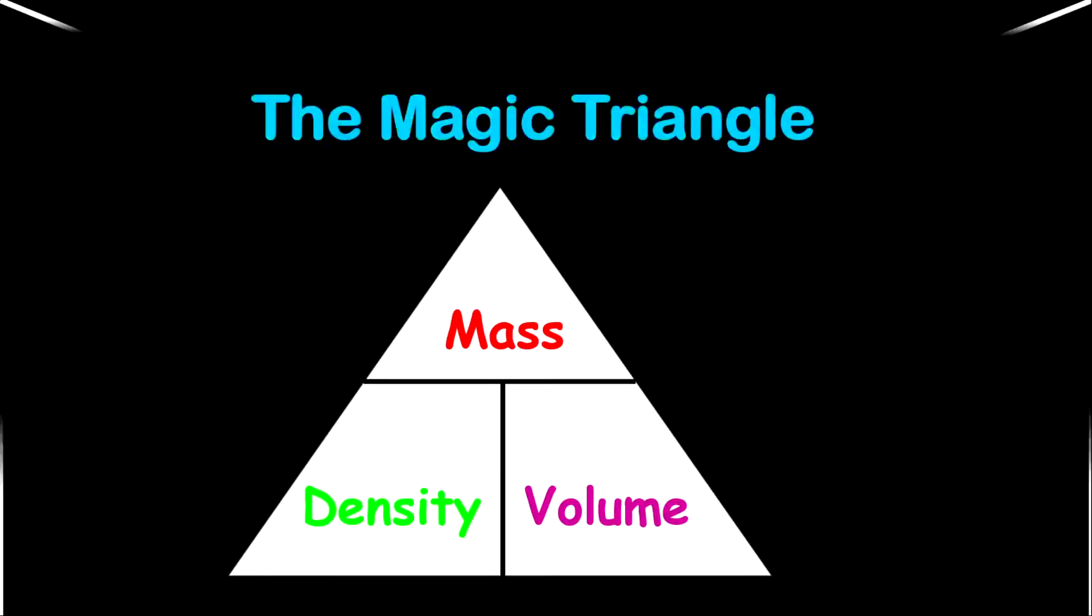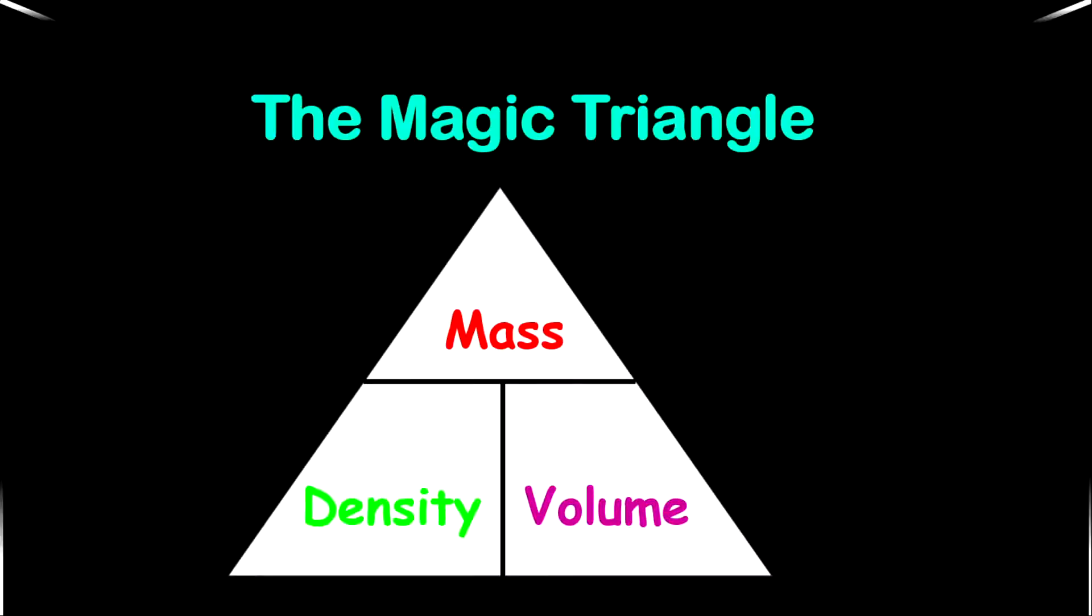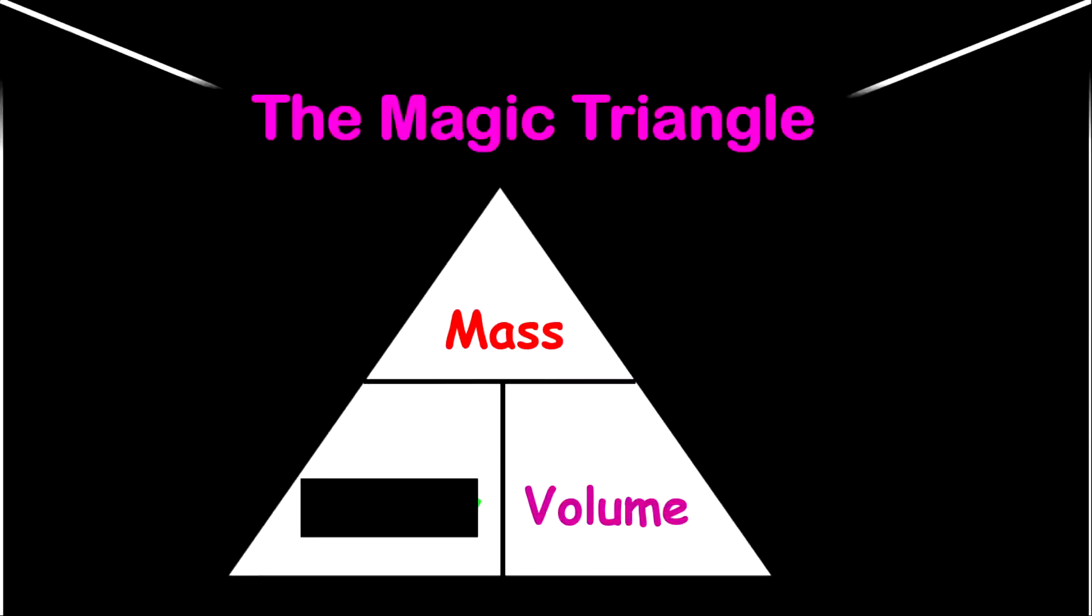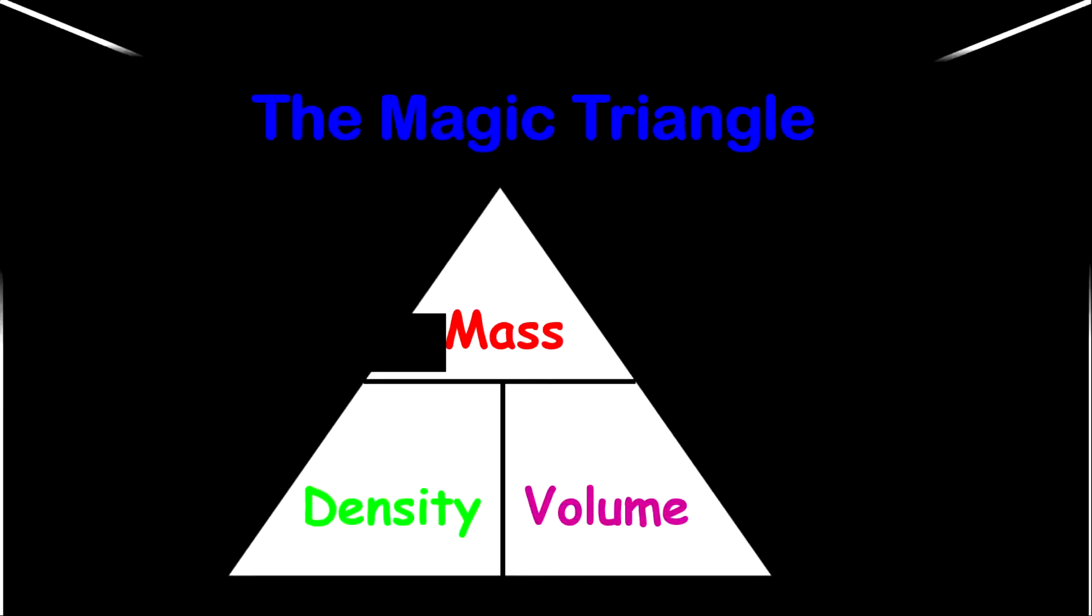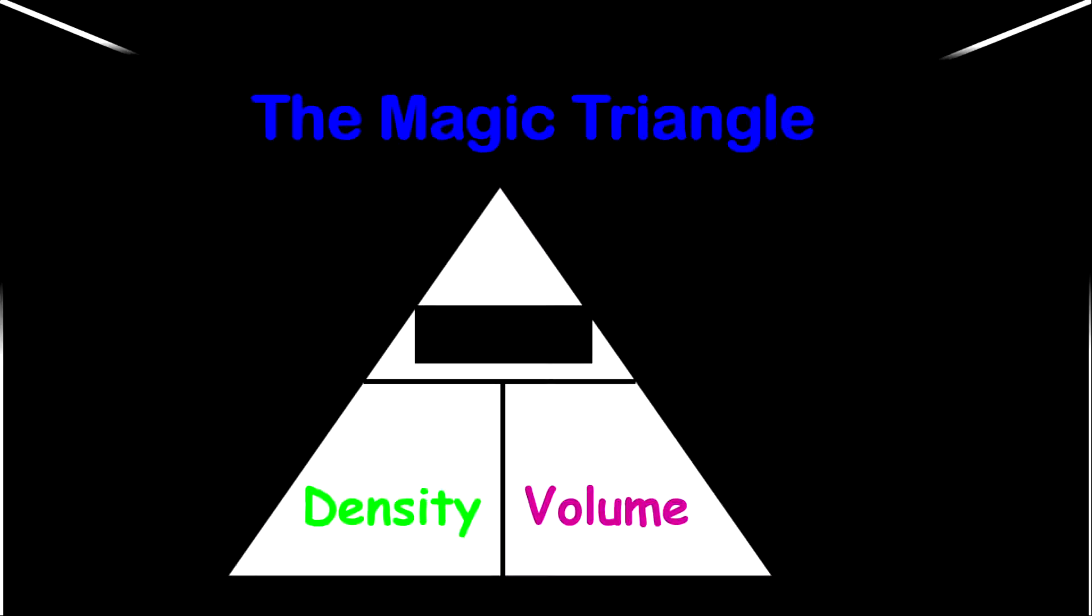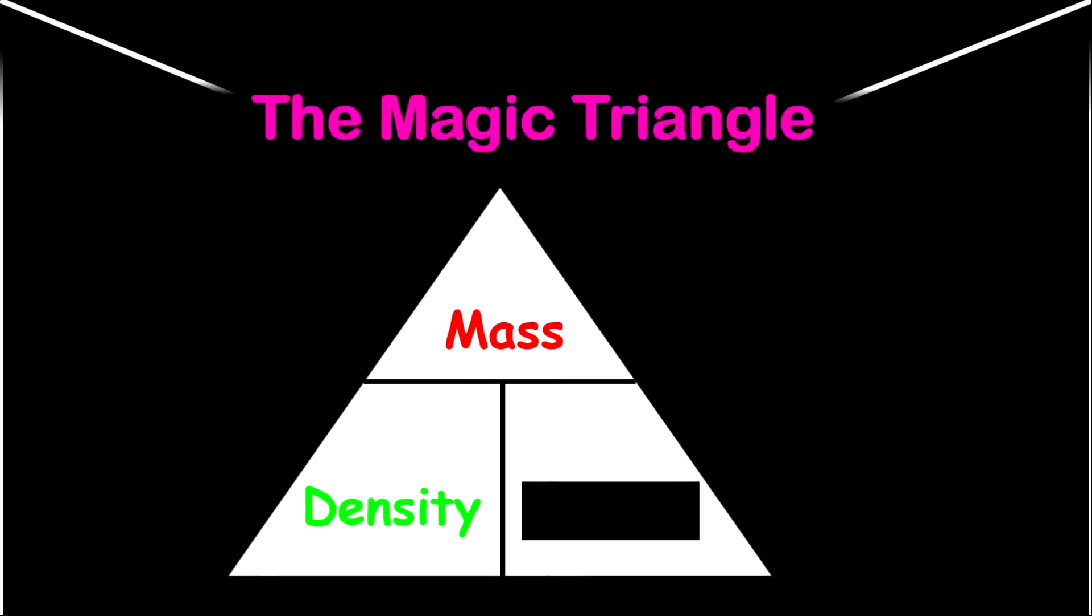So let's look at a magic triangle that will assist you in finding any of these quantities. If you want to find a specific quantity, what you need to do is to cover it up. So let's find density first by covering density. And if you cover density, what you're left with is mass over volume. Let's try find mass. Let's cover mass. What you're left with is density times volume. And of course, if you want to find volume, what you'll surely get is mass over density.